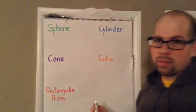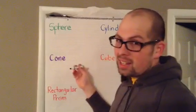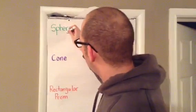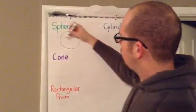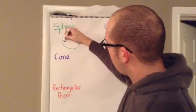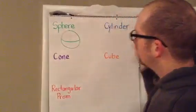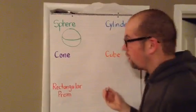Let's start with a sphere. Spheres are kind of easy. Draw a circle. And then draw a curved line kind of through the middle. It looks like a ball because that's what a sphere looks like.